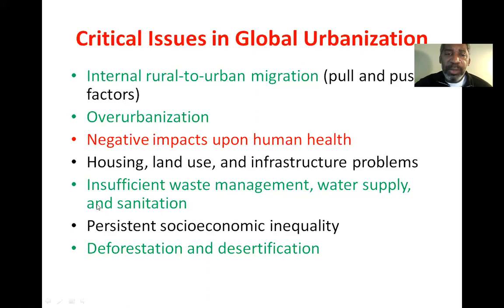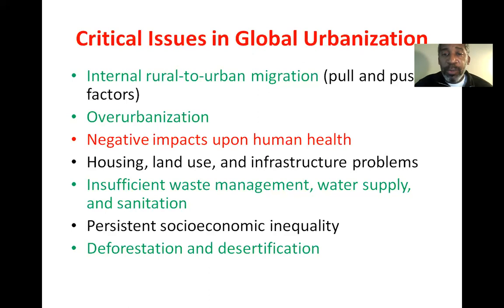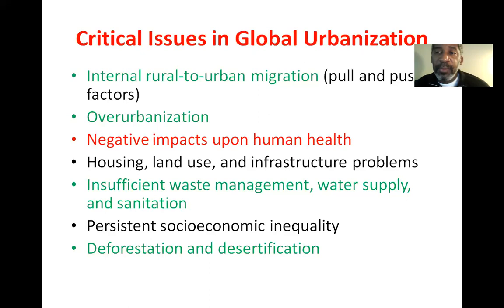The term associated with human population growing faster than cities can support is over-urbanization. Over-urbanization is too many people and not enough water, sanitation, housing, or food. That's essentially the problem in many parts of the developing world, which has negative impacts on human health. There's also lack of housing, land use issues, infrastructure problems, and insufficient waste management — no trash collection in many cases, unless communities themselves engage in collecting their own refuse.